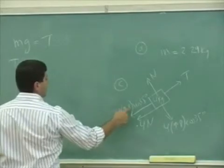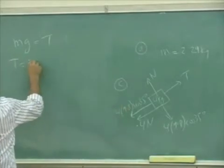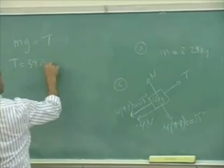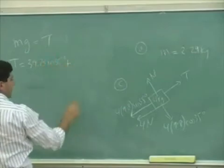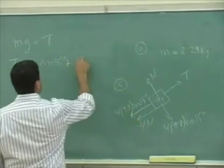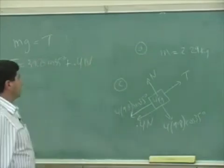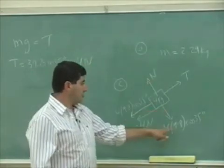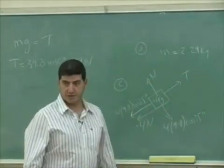And the T is going to have to equal to the sum of both of these forces. Well, this one we can rewrite as 39.2 plus 0.4N. But the N is equal to 39.2 cosine of 35.